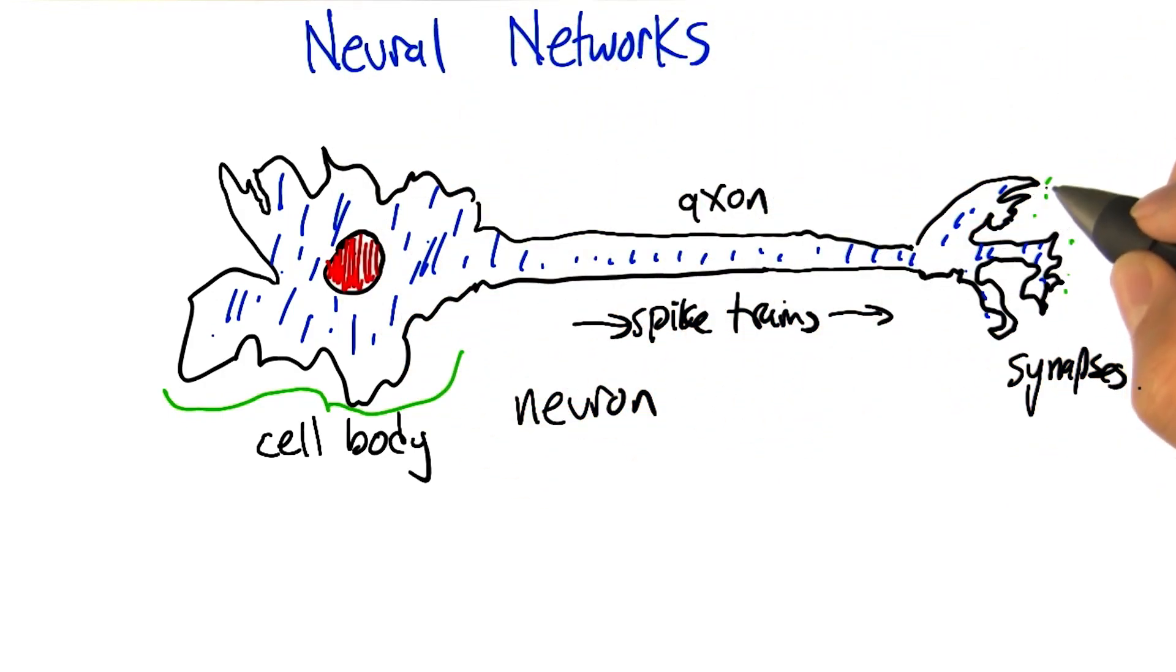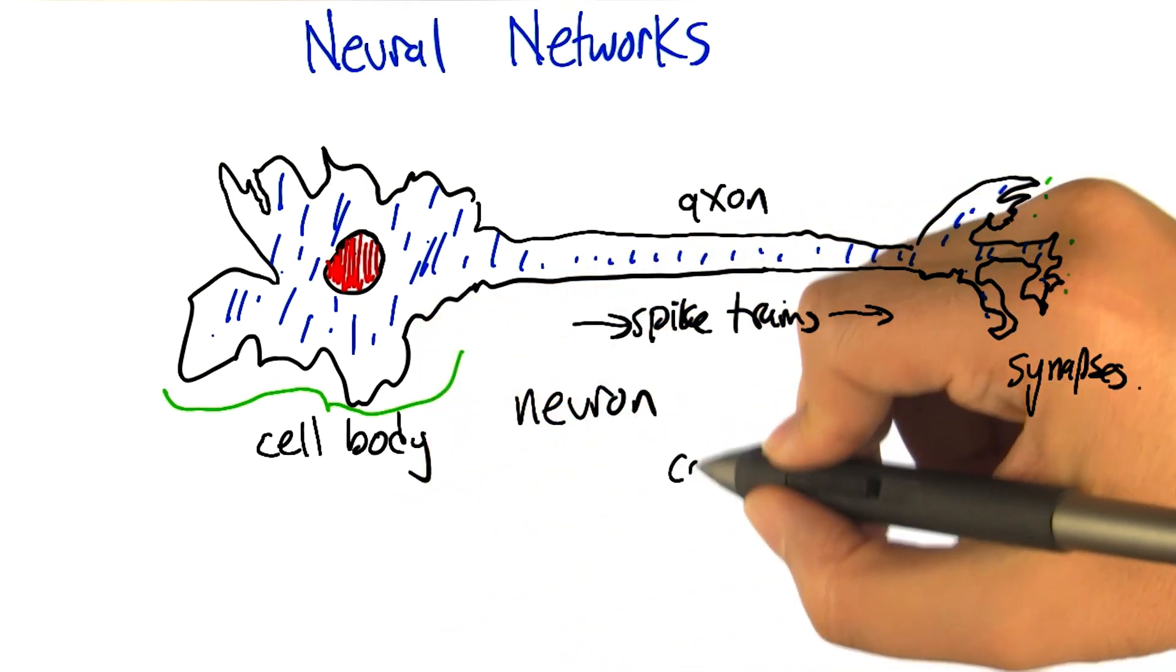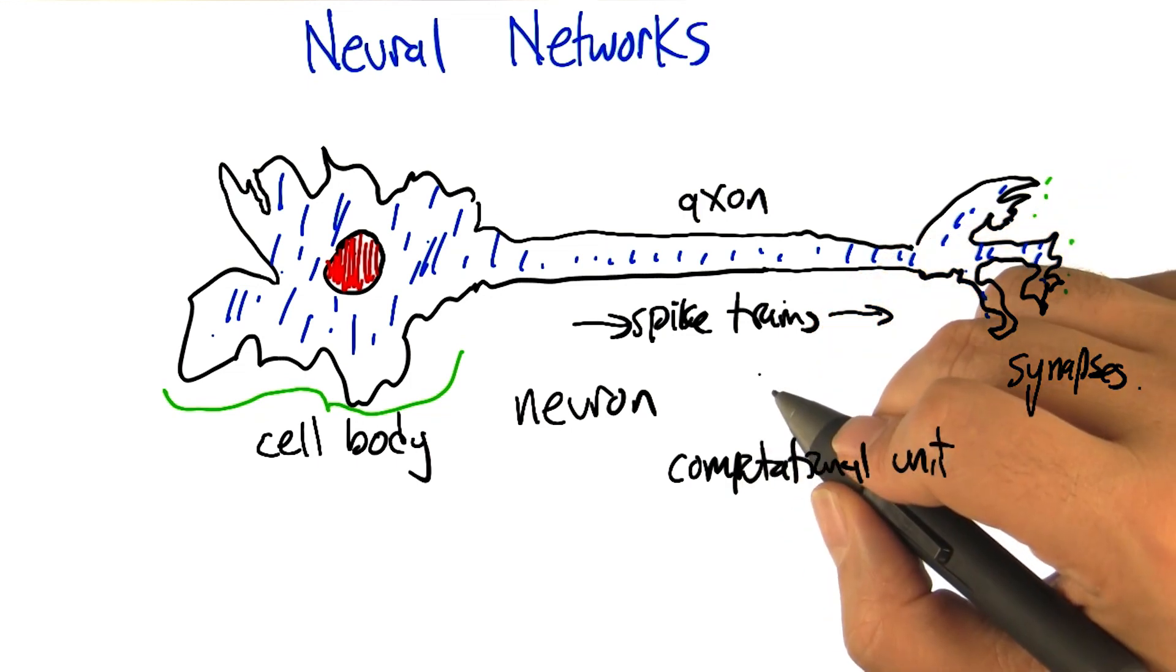And then causes, across the synapses, excitation to occur on other neurons, which themselves can fire, again, by setting out spike trains. And so, they're very much a kind of a computational unit. And they're very, very complicated.